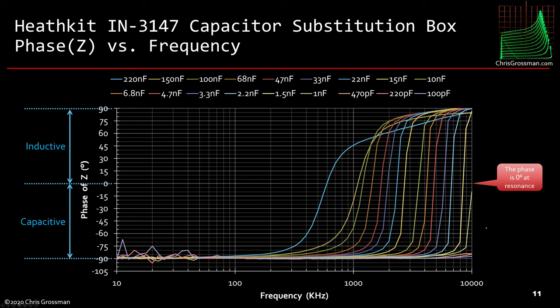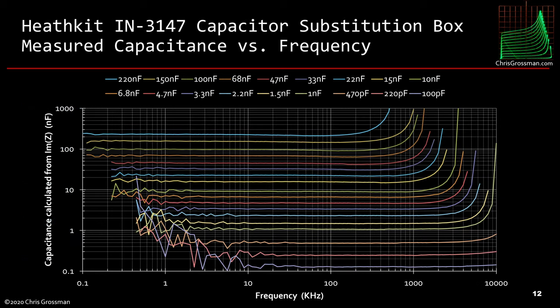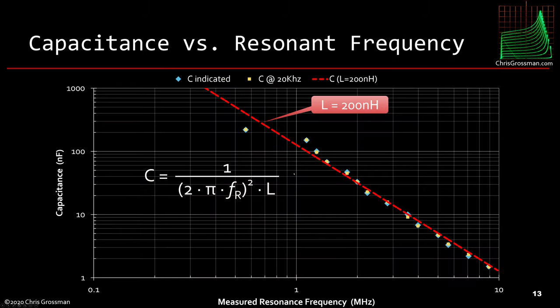I was kind of curious what the equivalent circuit model would be of this box, so if I used it I could put it in a simulation. Here are all the capacitances I've measured over the whole frequency range. This is all the different switch positions. You can see they're spaced out nicely and a little over three decades of coverage. That's very useful.